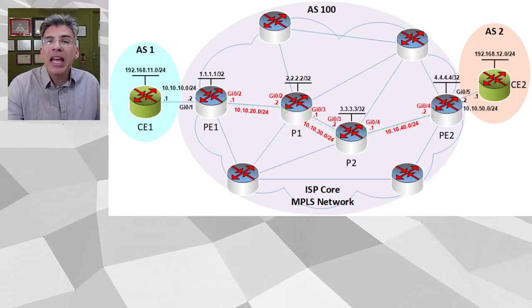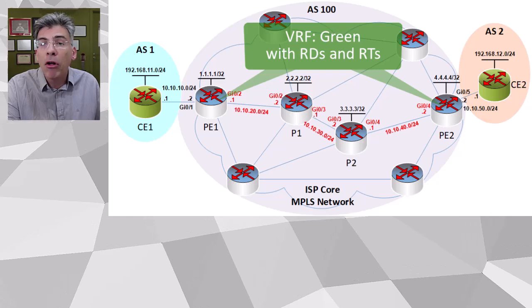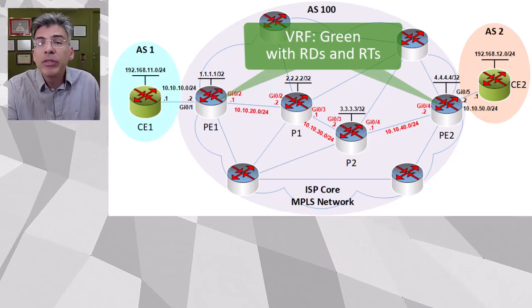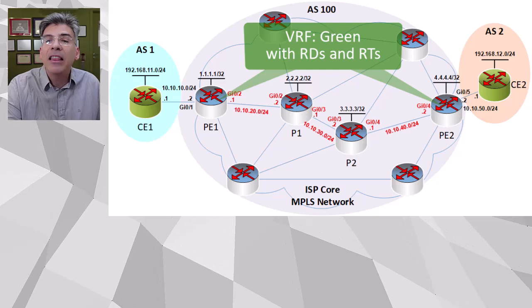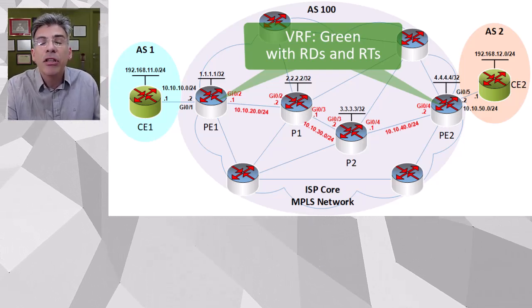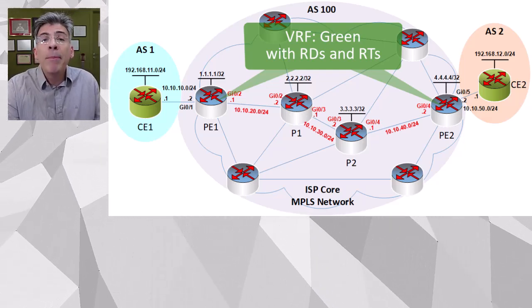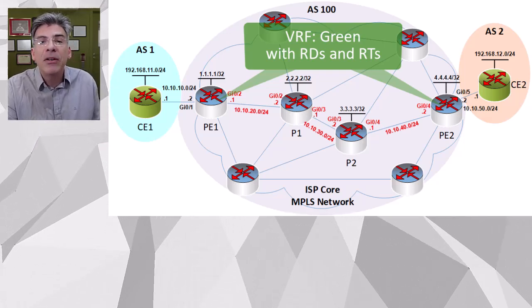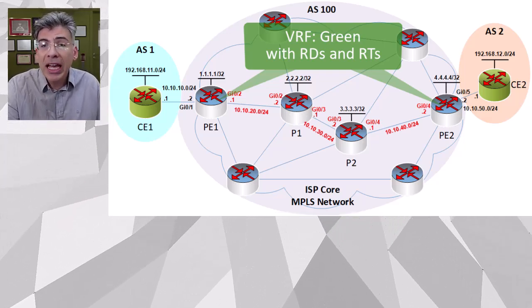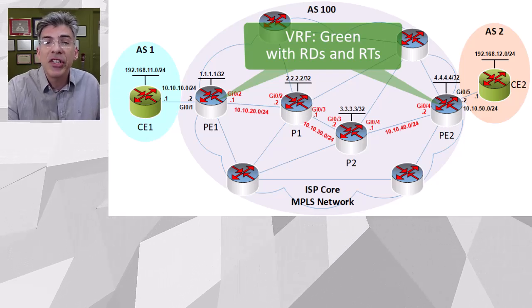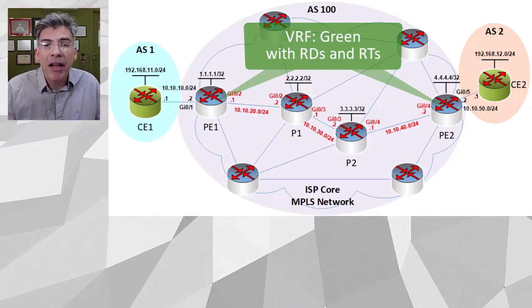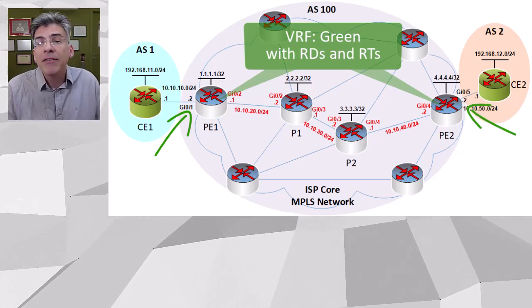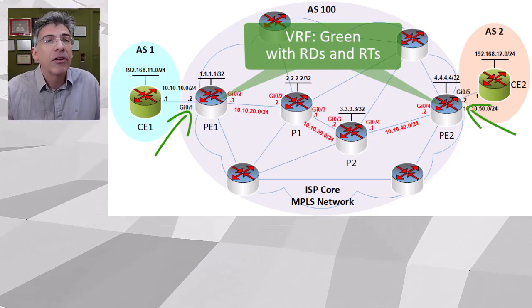Next, we created the appropriate VRF called green within PE1 and PE2, along with the route distinguishers and the route targets that are assigned to those VRFs. Remember, VRFs are created only on PE routers. Once created, the customer-facing interfaces are assigned to that VRF, so this interface and this interface are configured to be on VRF green.